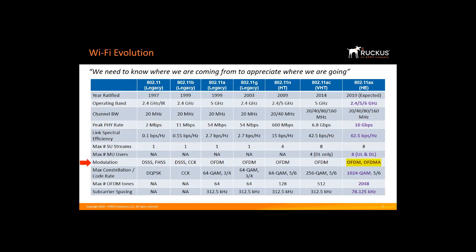11ax introduces a new modulation scheme called Orthogonal Frequency Division Multiple Access, or OFDMA — new to Wi-Fi but proven in LTE. 11ax also adds 1024 QAM, allowing higher data rates. The maximum number of OFDM tones increases from 64 in 11n up to 2048 on a 160 MHz channel in 11ax. The subcarrier spacing is reduced four times, from 312.5 kHz to 78.125 kHz, allowing better equalization and enhanced channel robustness for outdoor operation.